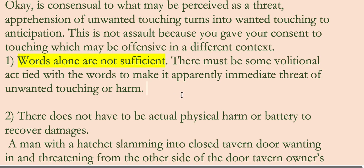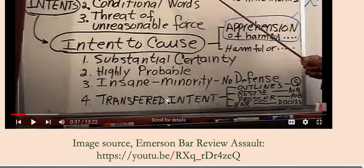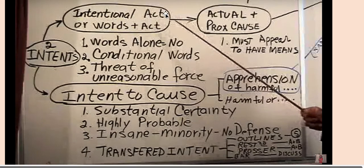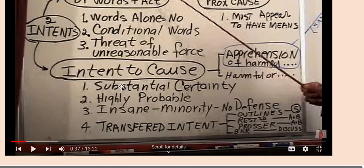Now I'm going to just go over part of these. If you look at Emerson, he breaks this apart. You can look at Intentional Act — he says there are two parts. You have to have Actual and Proximate Cause; that's causation. Words alone: no. So if you just have words and you don't have anything showing something is really going to happen, that's not sufficient. And it has to be imminent. Conditional words — I'll get into that in a minute. And threat of unreasonable force. You have the Intentional Act, or words and Act, but both of them have Act with it.